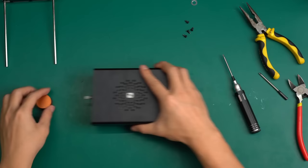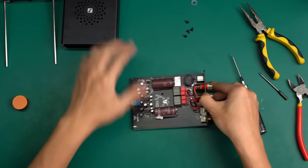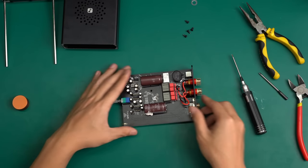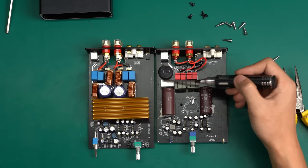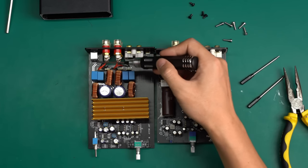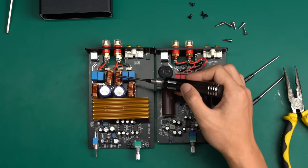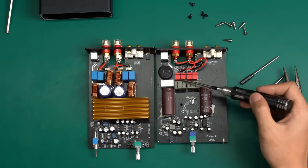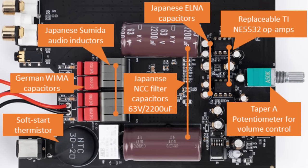Here is the V3's circuit board. As two very similar products, I also disassembled the A07 for a comparison of the circuit boards. As you can see, the V3 has an NTC soft start resistor and a relay, which the A07 does not have. The A07 uses a common toroidal inductor, while the V3 uses a professional audio inductor, which is said to be produced by Sumida from Japan.